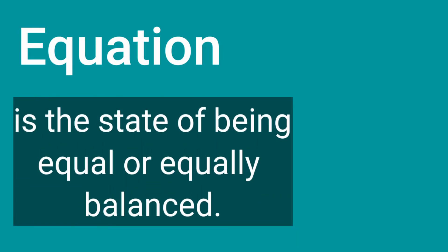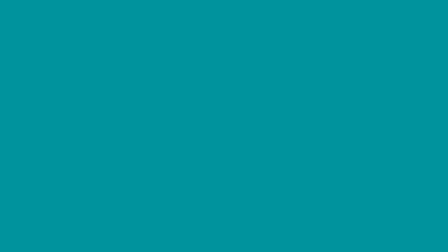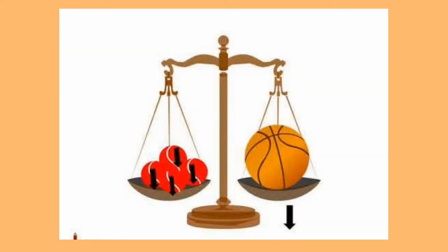What is an equation? Equation is the state of being equal or equally balanced. The best illustration for this topic is the weighing scale. Here's our first illustration: on the left side there are four small balls and on the right side there is one big ball. So in the illustration it shows that the weighing scale is equal, thus the four small balls is equal to one big ball.